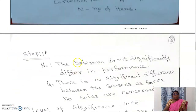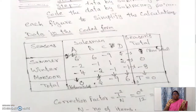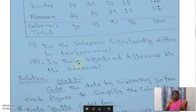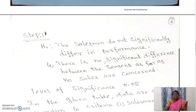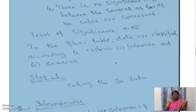The first step is to fix the null hypothesis, denoted H0. The null hypothesis is: the salesmen do not significantly differ in performance. Also, there is no significant difference between the seasons as far as sales are concerned. The level of significance is 0.05. In the given table, data are classified according to two criteria: salesman and season. That is why it comes under the two-way classification model.